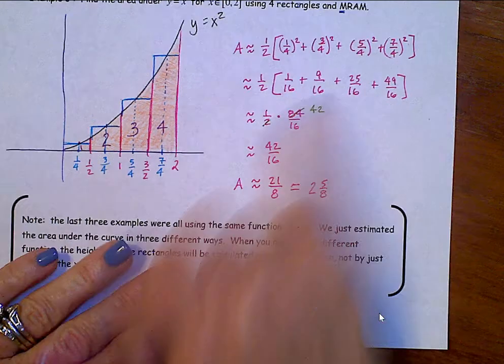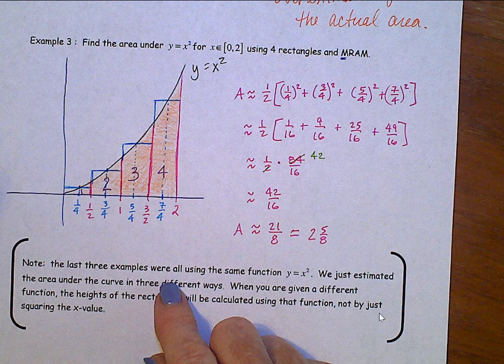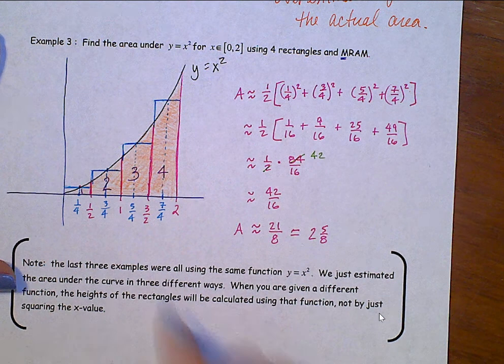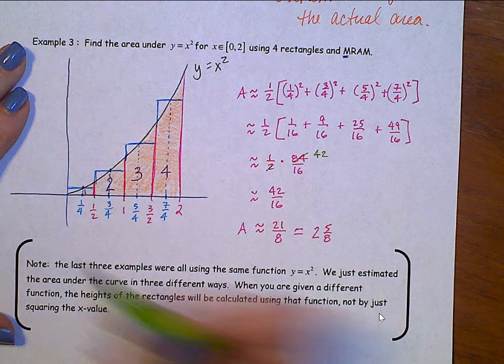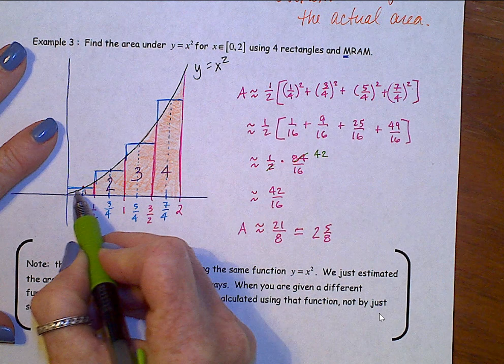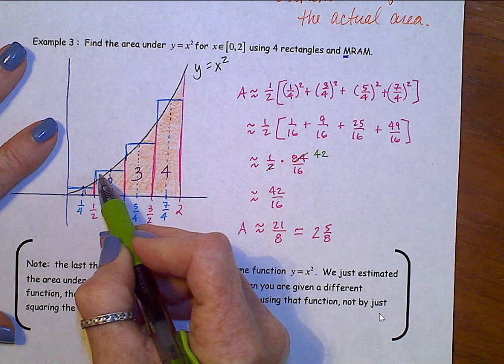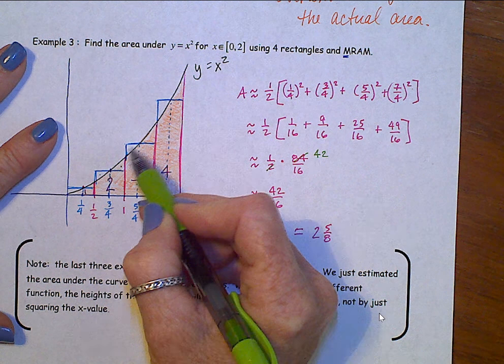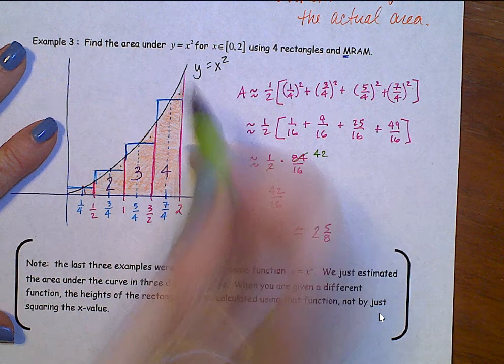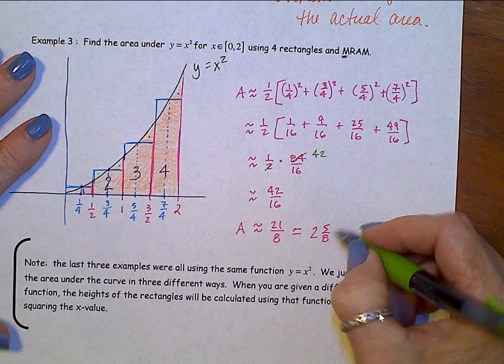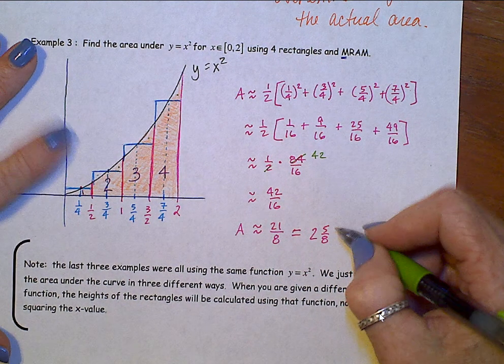So, a couple of things to notice with the MRAM. Overestimate or underestimate? It's hard to tell, because this area right here and this one, we took some extra, but then we missed some. Right here, we took some extra, but then we missed some. Took some extra, missed some. Took some extra, missed some. So, MRAM is the, of RRAM and LRAM, MRAM is a better estimate. Harder to do, but better estimate.